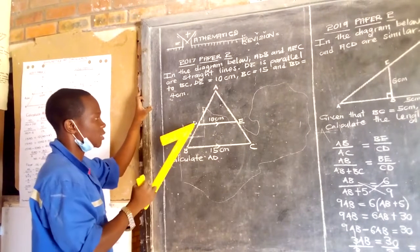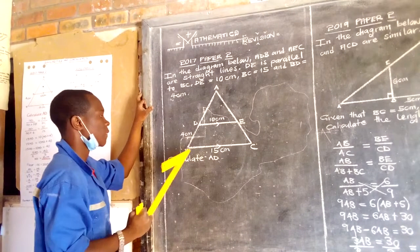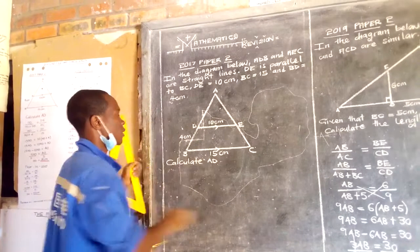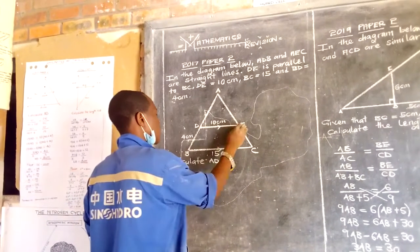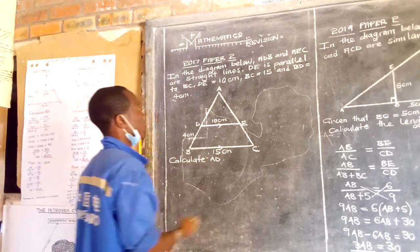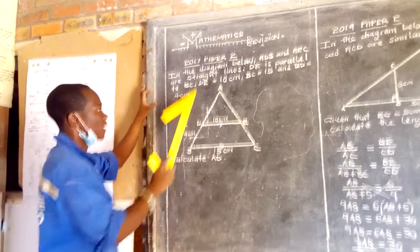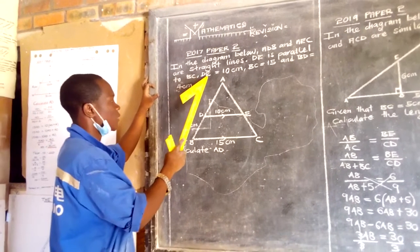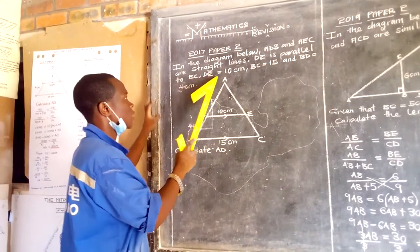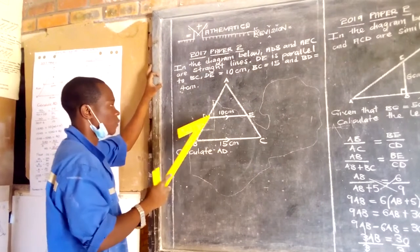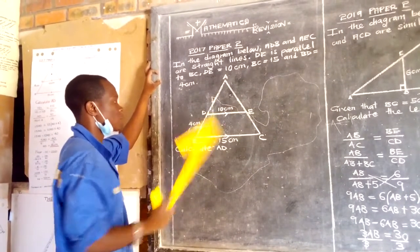Lines BD and BC are parallel. Then the length GB is equal to 10 centimeters. From D to A is 10 centimeters as shown.